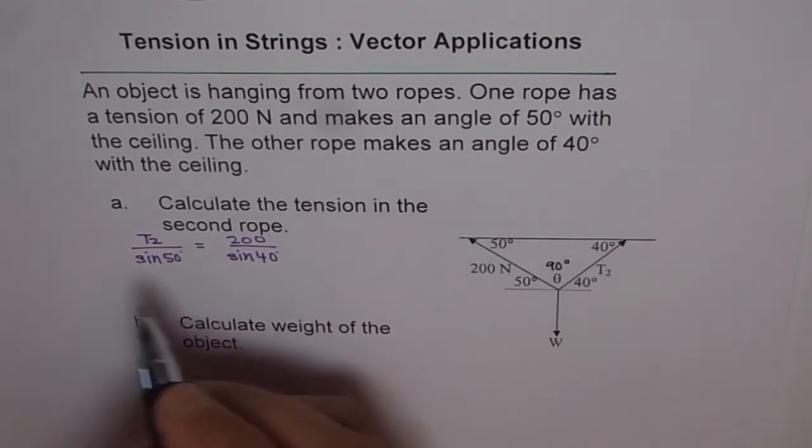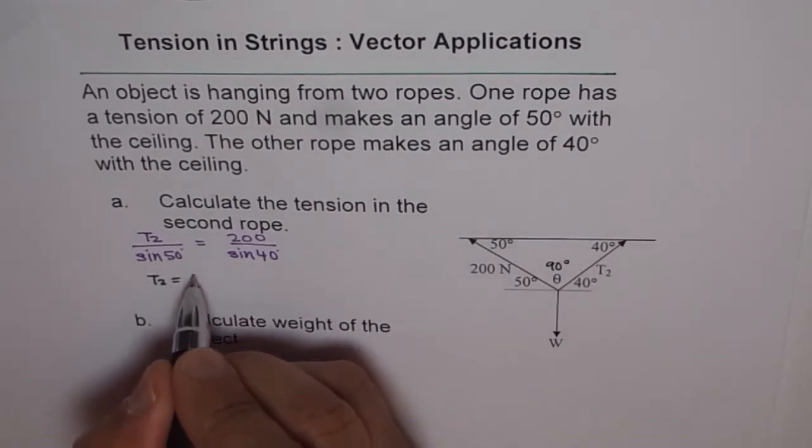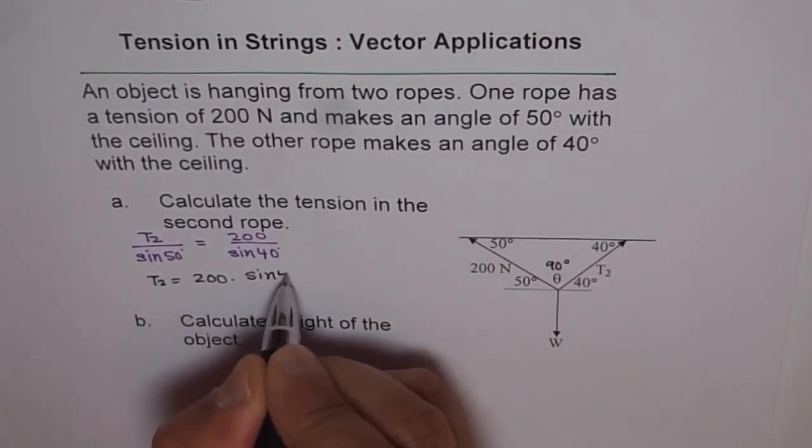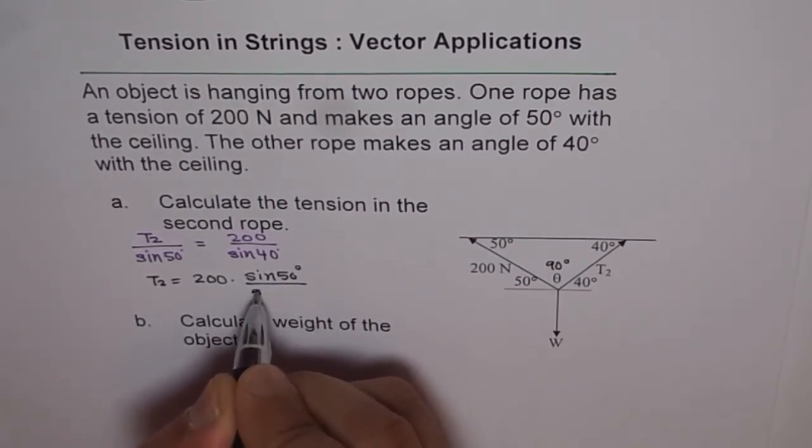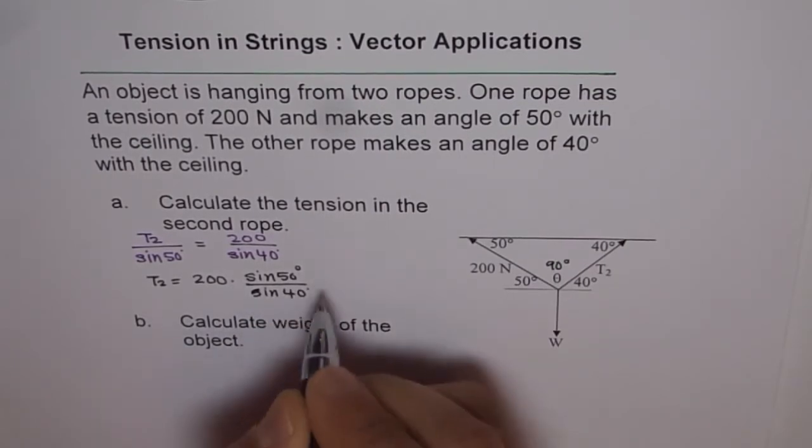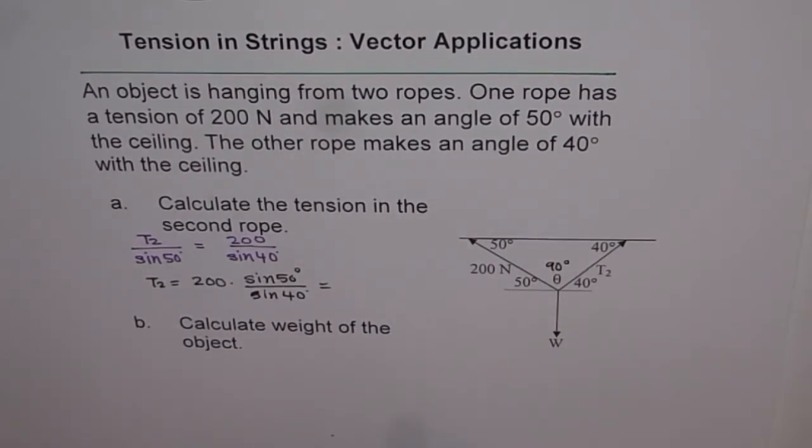We get T2 equals to 200 times sine of 50 degrees divided by sine of 40 degrees. We can use the calculator and then find the answer. It is 200 times sine of 50 divided by sine of 40.